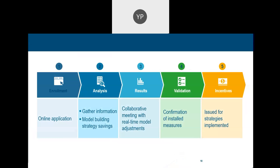This is an example of how the virtual audit works for Duke Energy. The process starts with an online application, and then the analysis is done completely online. There is a collaborative meeting with real-time model adjustments with the customers. And should the customer decide to go ahead with an upgrade, there is also assistance with incentive paperwork and the like.